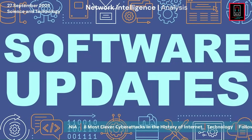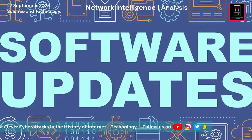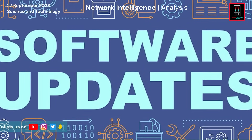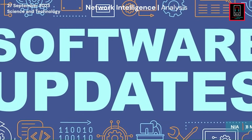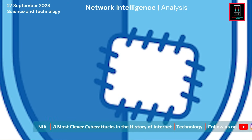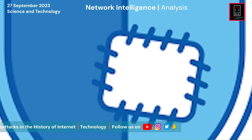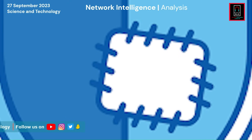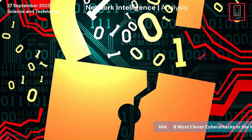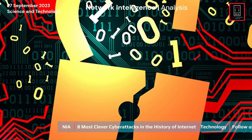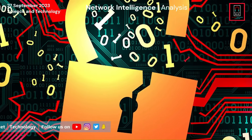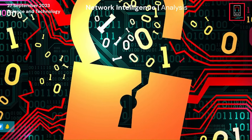Regular Software Updates and Patch Management: Many cyber attacks exploit known vulnerabilities in software and operating systems. Organizations should use automated patch management systems to ensure all components are up-to-date with the latest security patches. Legacy systems that are no longer supported by vendors should be upgraded or replaced to avoid exposure to known vulnerabilities.